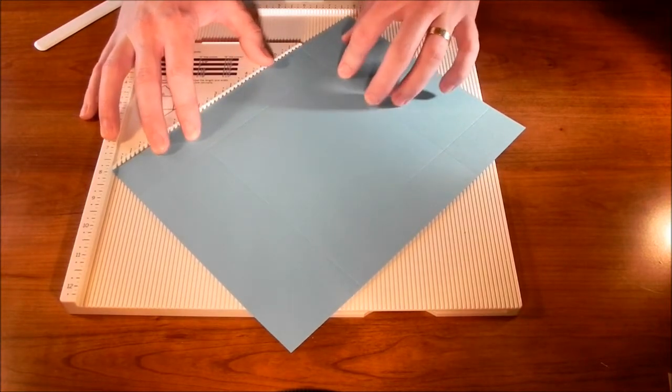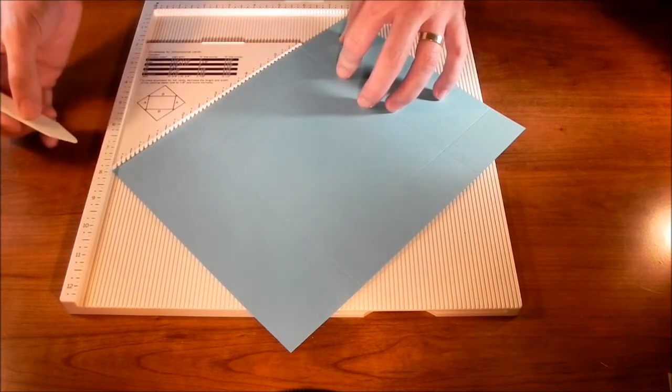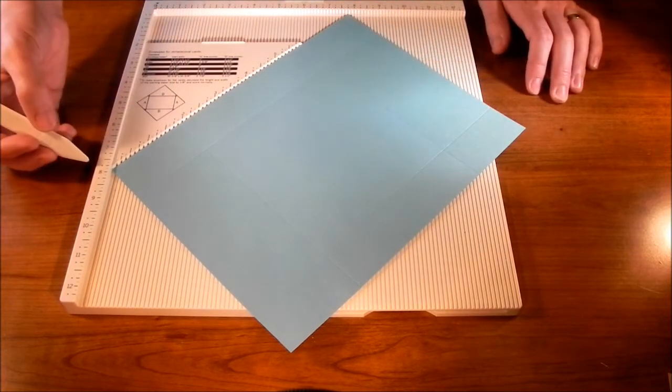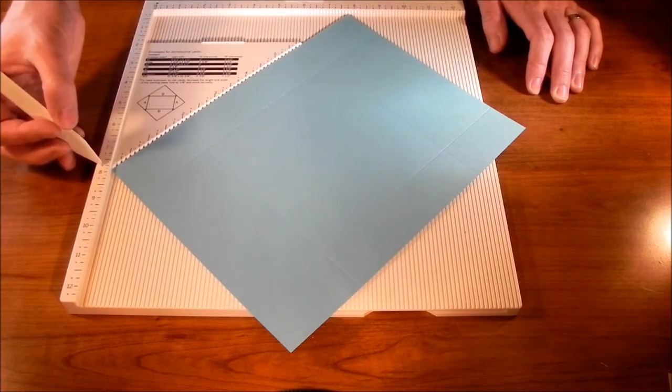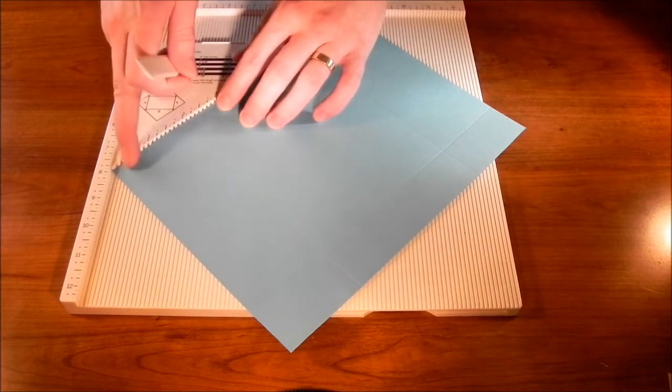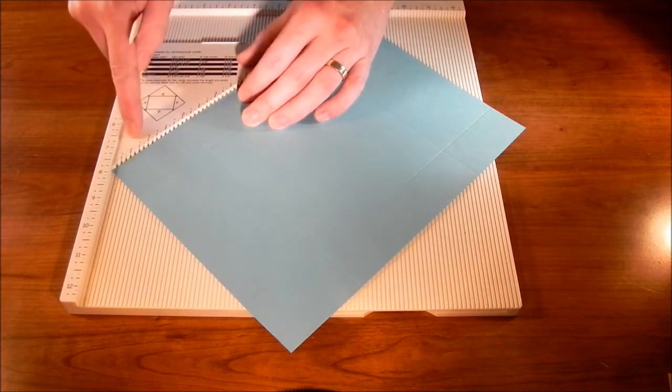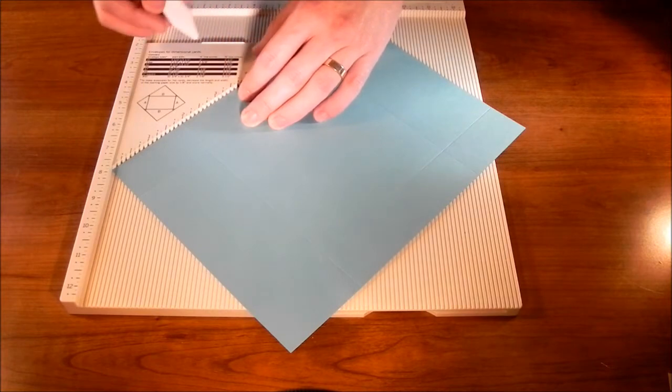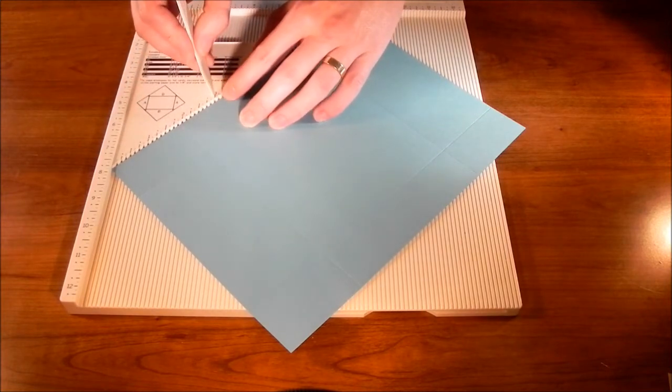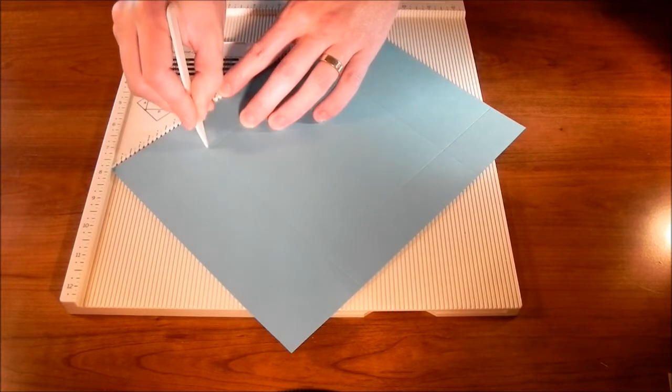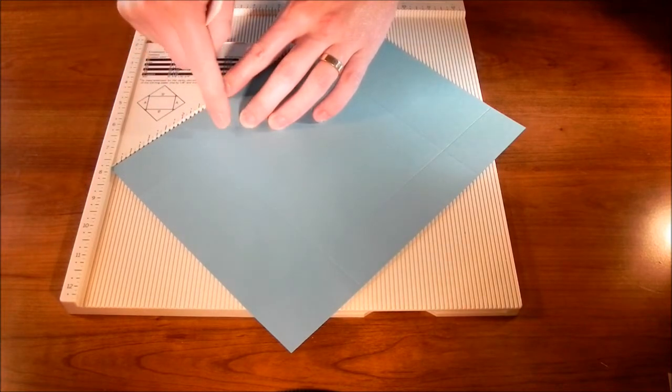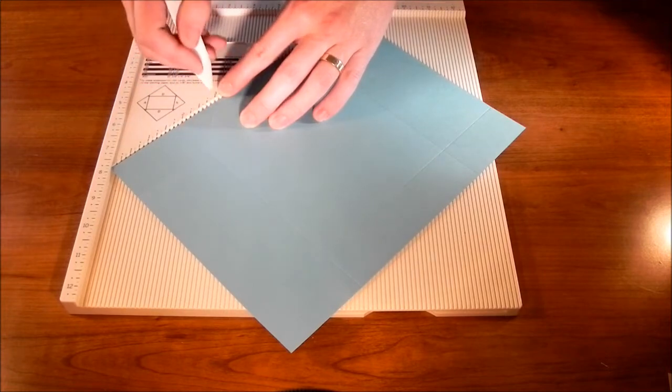So we're just going to play around with that until we get it right where we need it to be. Okay, that looks pretty good. So just as a point of reference for you, this point is at 7 and 3/4, and this point is at 7 and 3/4, so that might help you line everything up. So on our diagonal piece, you can see that we've got marks here. We're going to score down at 3 inches, right to where the horizontal and vertical lines meet.